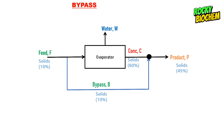We should always note that the percentage of solids in the feed is always equal to the percentage of solids in the bypass, because it is the same feed from which we bypass a portion. Most questions will not explicitly state the percentage of solids in the bypass — they will only give the feed composition — so always remember that the bypass has the same solid fraction as the feed.